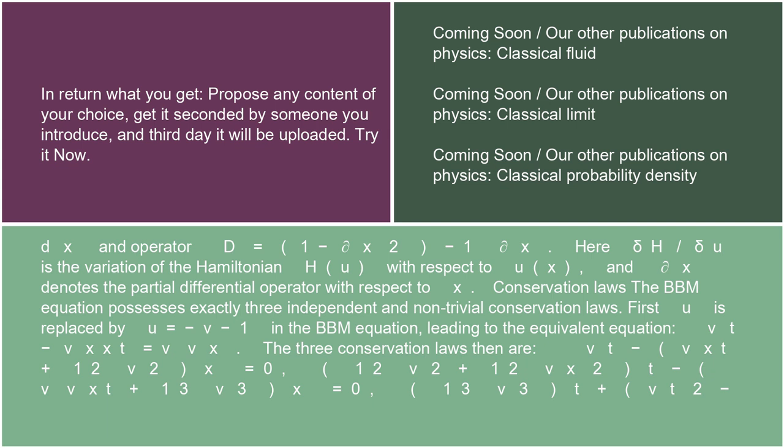and ∂_x denotes the partial differential operator with respect to x. Conservation laws: the BBM equation possesses exactly three independent and non-trivial conservation laws. First, u is replaced by u = -v - 1 in the BBM equation, leading to the equivalent equation v_t - v_xxt = vv_x. The three conservation laws then are (v_t - v_xt + 1/2·v²)_x = 0,